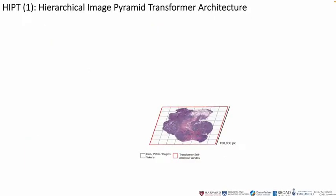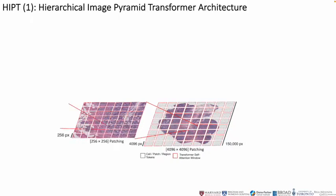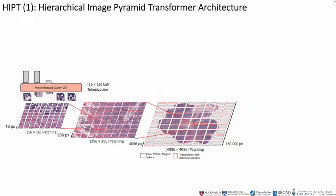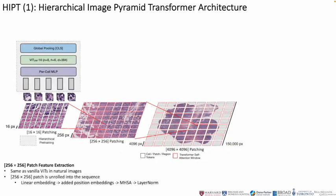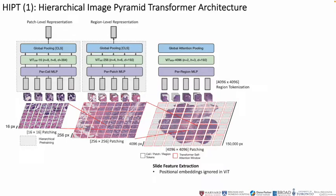With these properties in mind, we present the Hierarchical Image Pyramid Transformer, or HIPT, which recursively subdivides the whole slide into non-overlapping tokens — first patching into 4K-sized image regions, and within each 4K-sized region we subdivide into 256-sized patches and subsequently into 16x16 cells. We then perform a nested bottom-up aggregation within each window using a patch-level ViT, modeling cell-to-cell dependencies within the patch and outputting a patch-level feature representation. These computed patch features are used as the input sequence for the region-level ViT, and subsequently region features are used as the input sequence for the slide-level ViT.